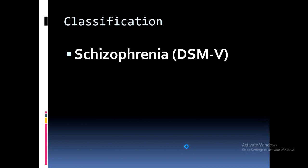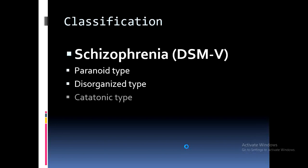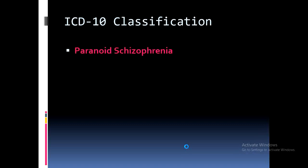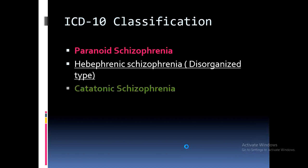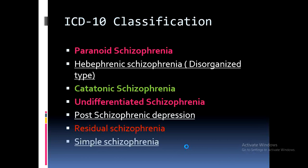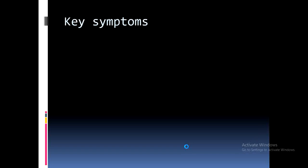In DSM-5, schizophrenia is classified into paranoid type, disorganized type, catatonic type, undifferentiated type, and residual type. The ICD-10 classification includes paranoid schizophrenia, hebephrenic or disorganized schizophrenia, catatonic schizophrenia, undifferentiated schizophrenia, post-schizophrenic depression, residual schizophrenia, and simple schizophrenia.